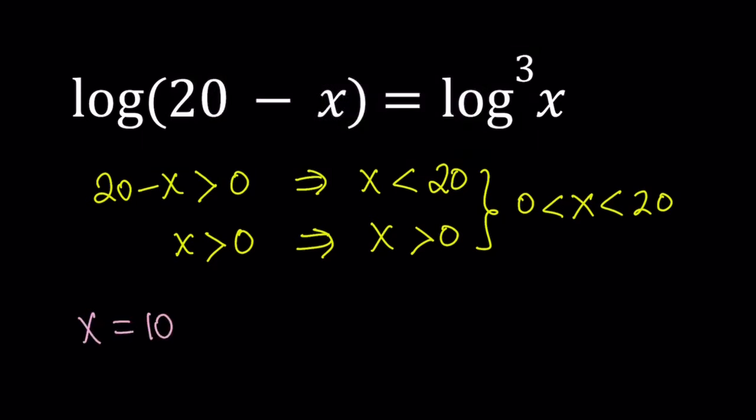If you substitute x with 10, you'll notice that we get log 10 on the left hand side. And on the right hand side, because 20 - 10 = 10, we get log 10 to the third power. Now, are they equal? The answer is yes, because log 10 equals 1, and when you cube it, you get 1 again. So they're equal. It's good.